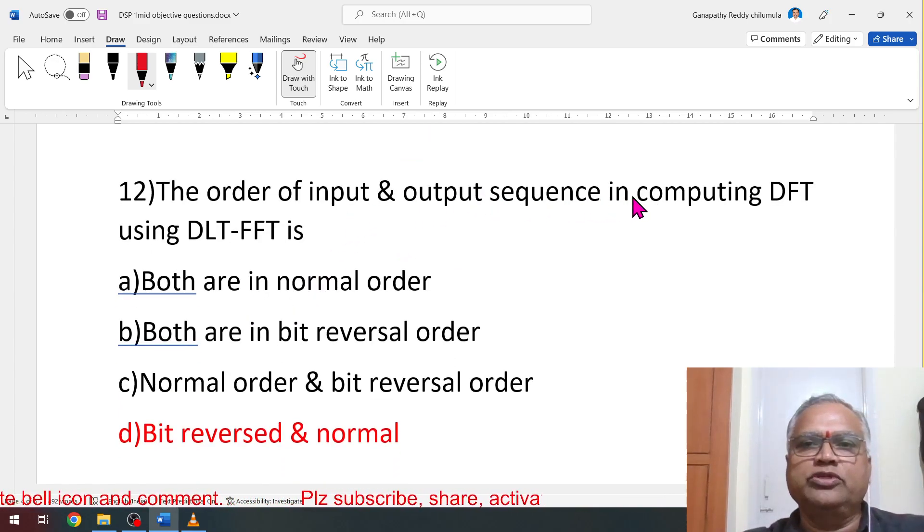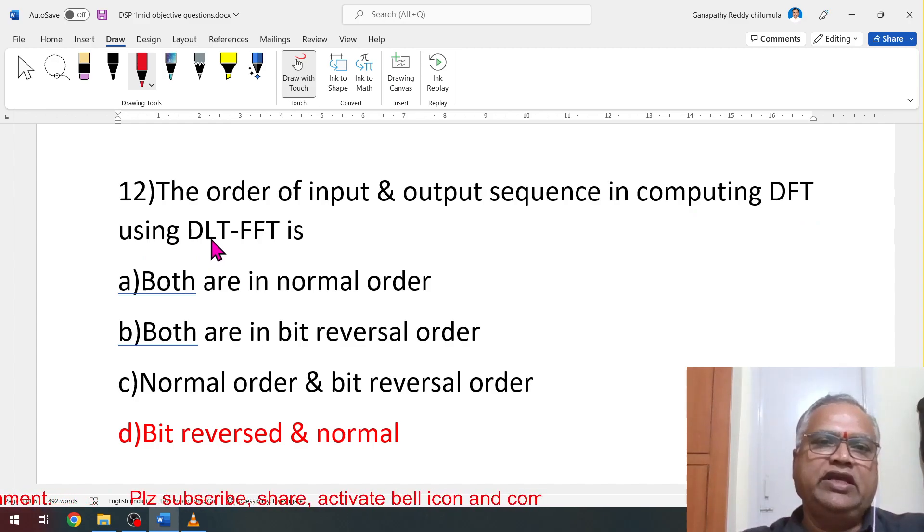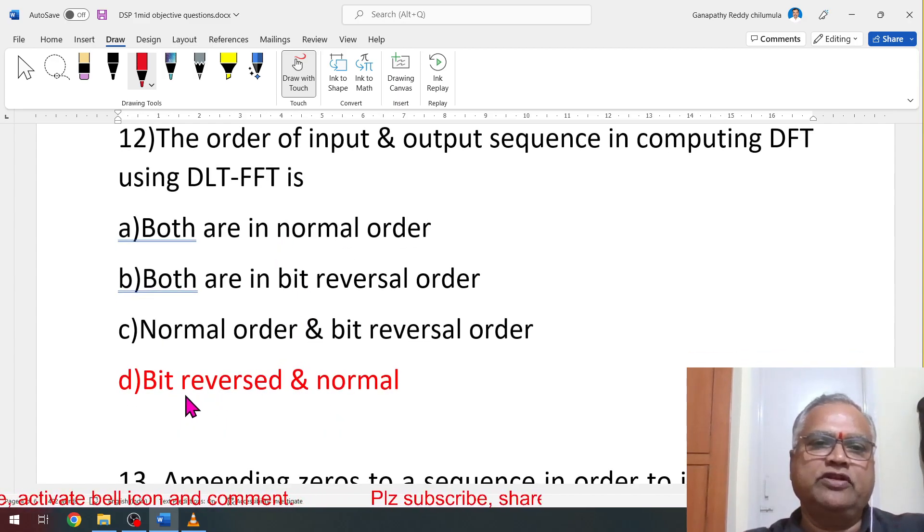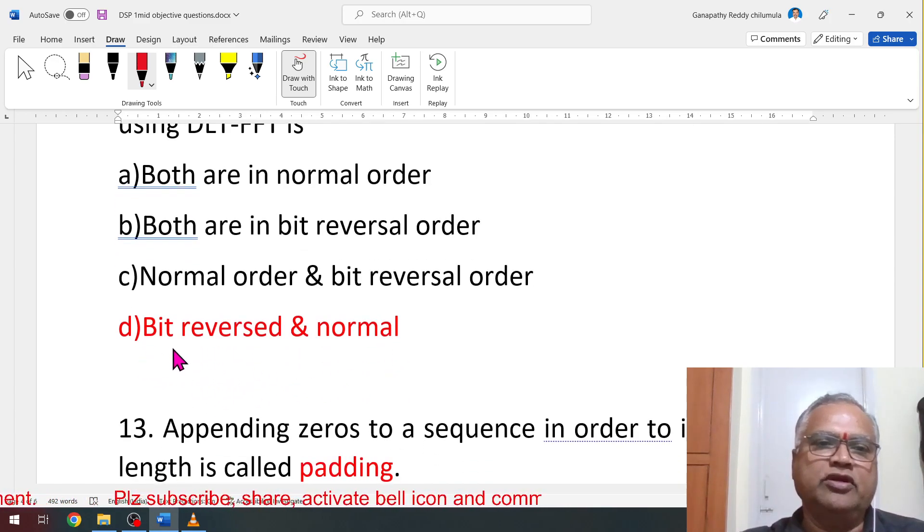The order of input and output sequence in computing DFT using DIT-FFT is: in DIT-FFT, input sequence is bit reversal, output is in normal. Bit reversed input, output is normal. D is correct.